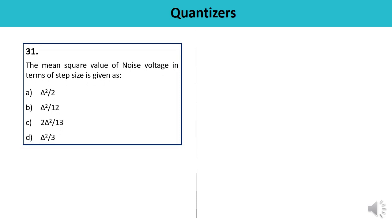Question 31: What is the mean square value of noise voltage in terms of step size delta? This is nothing but delta squared upon 12 — that is δ²/12. This is also known as quantization error, quantization noise power, or normalized noise power. Confirmed correct.